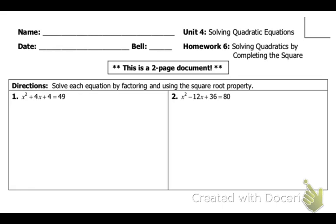I'm going to start by factoring first. What times what gives me 36, but also negative 12? Remember, this should be the same thing. So, negative 6 and negative 6. So, x minus 6 squared is equal to 80.